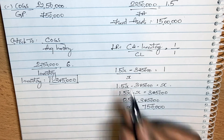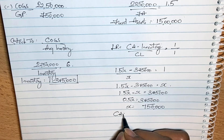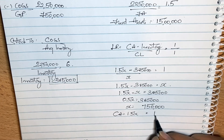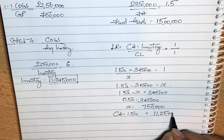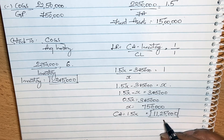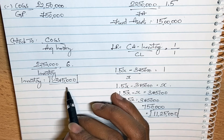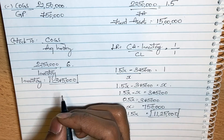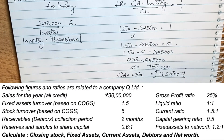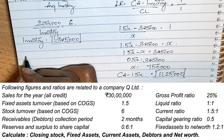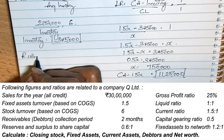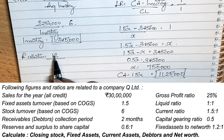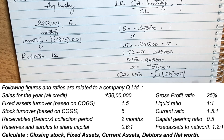So current assets equals 1.5x equals 1.5 times 7,50,000. Now for debtors, the receivables collection period is 2 months. The receivables collection period formula uses number of months — here 12 months divided by receivables turnover.